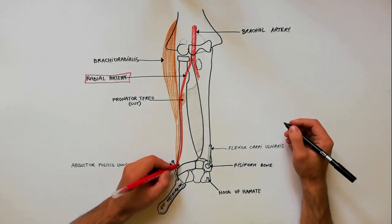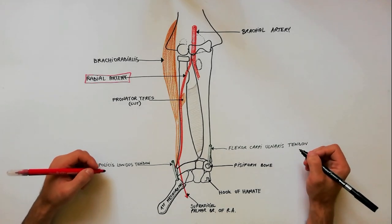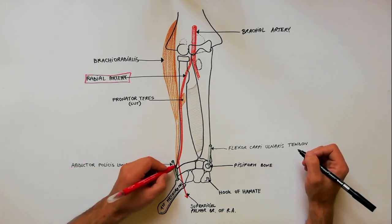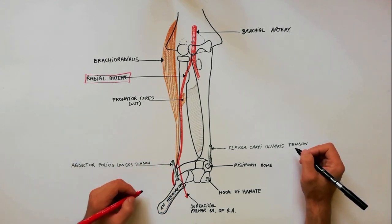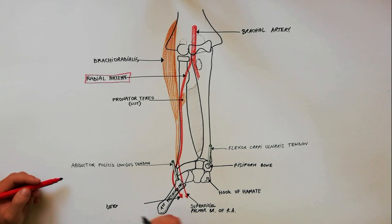At the level of the styloid process of radius, it gives off the superficial palmar branch of radial artery. Then the radial artery passes underneath the tendon of abductor pollicis longus to arrive in the anatomical snuffbox. Finally, the artery leaves the anatomical snuffbox and passes between the two heads of the first dorsal interosseous muscle to arrive in the palm as the deep palmar branch which is the terminal part of radial artery.